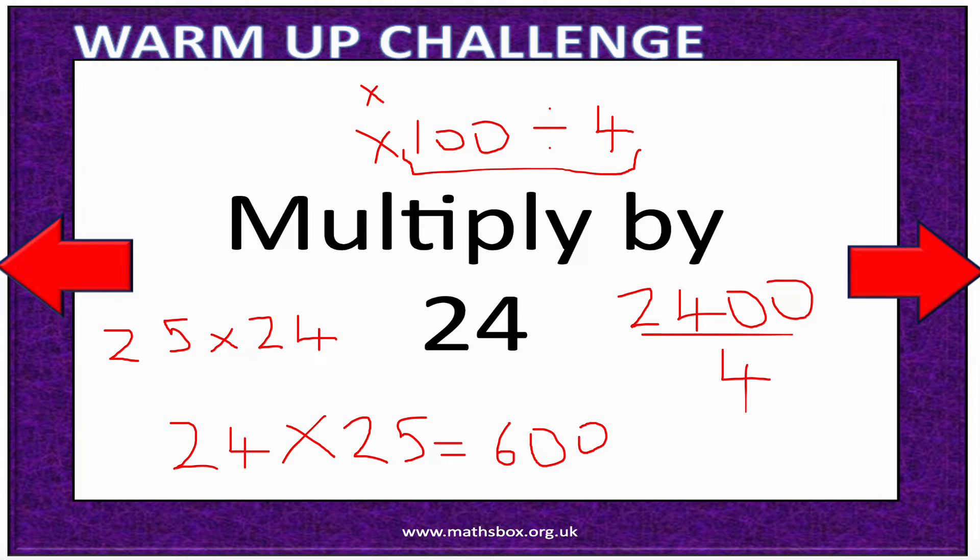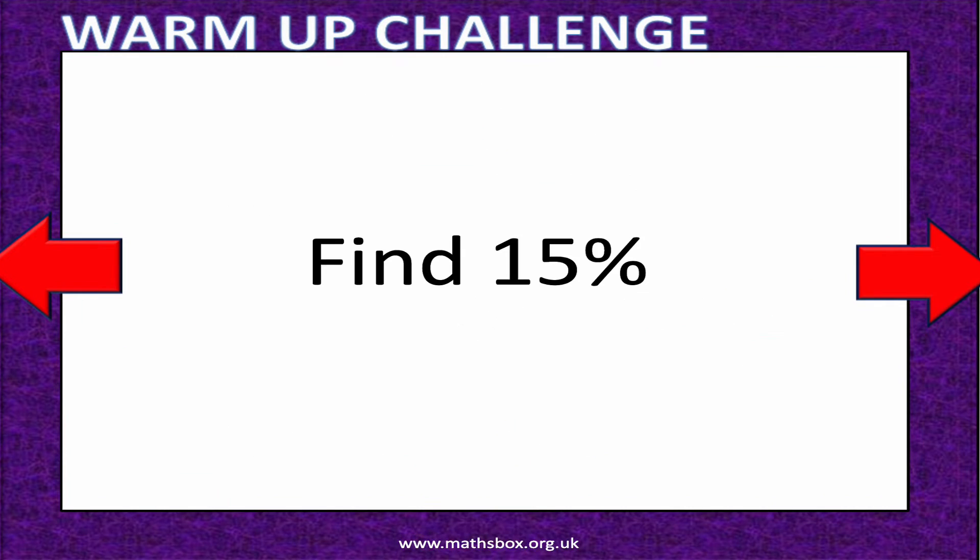Next one: find 15% of 600. I'm going to work out what 10% is. 10% means I divide it by 10, so 10% of 600 equals 60. 5% is half of 60, which is 30. 60 plus 30 equals 90, so the answer is 90.